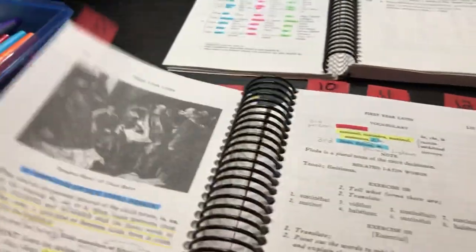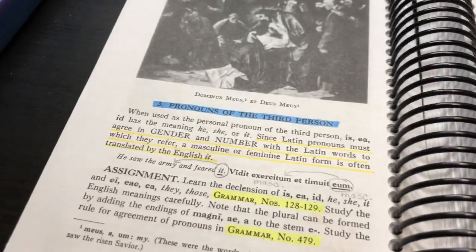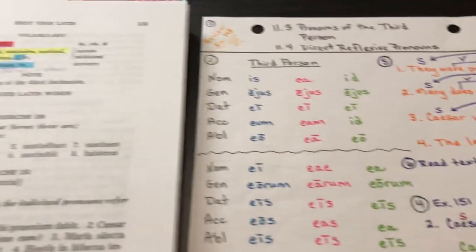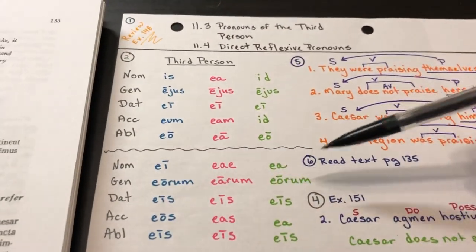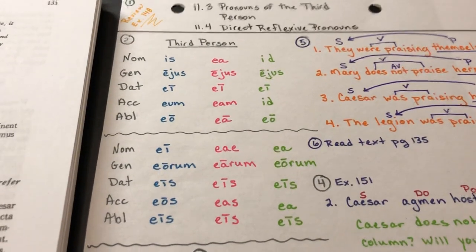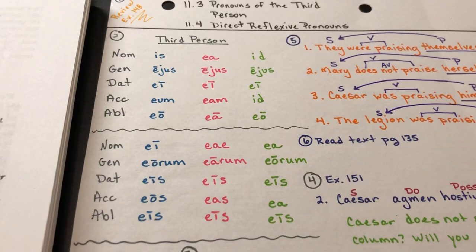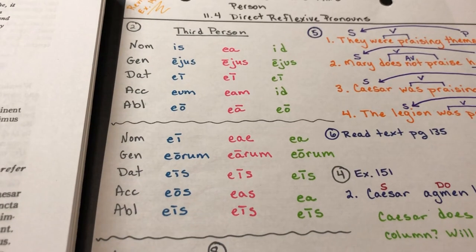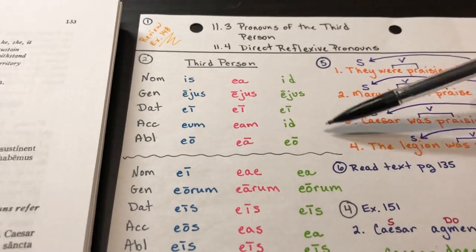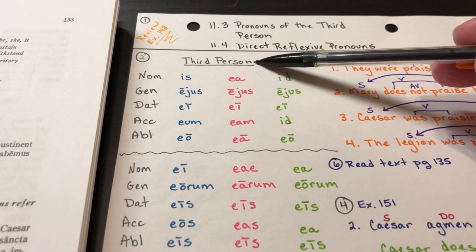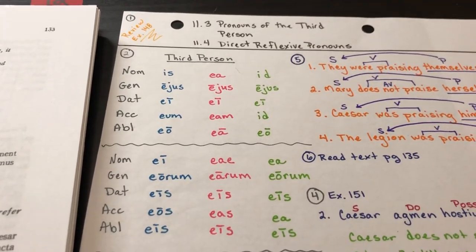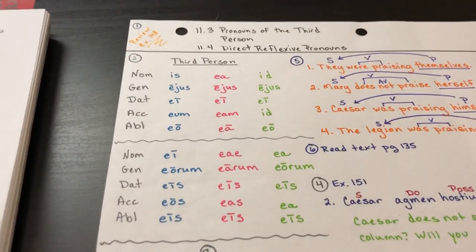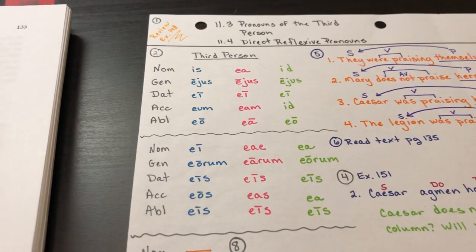Then we got into the pronouns of the third person. I already had this chart on the whiteboard—the blue, the pink, and the green. We just took some time to observe it. What do you see? Do you see any patterns? Do you see anything that looks familiar? Because I did not have this marked on the board. I wanted to see if they could figure out what it was. They figured out it must be masculine, feminine, and neuter. They thought it was some other declension or noun endings.